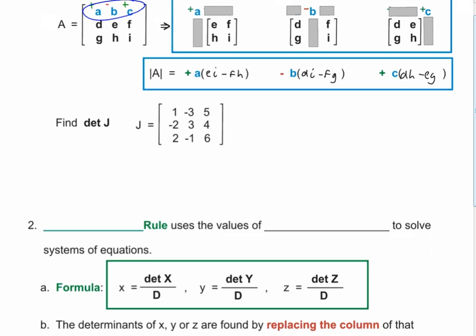We've got matrix J, and instead of doing the diagonal method we're going to do Laplace's method. To keep it simple, I'll expand off the top row. One thing that trips up students: right off the bat you have to be concerned about the sign multipliers. Top left is always positive, then you alternate — next one is negative, then positive.